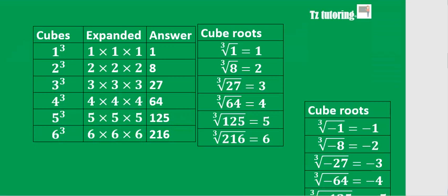A cube is a number multiplied by itself 3 times. The cube of 1 is 1 times 1 times 1, which is 1. The cube of 2 is 2 times 2 times 2, which is 8. The cube of 3 is 3 times 3 times 3, which is 27. You have to know the first 6 cubes. Just like squares and square roots, cubes and cube roots are also inverses.